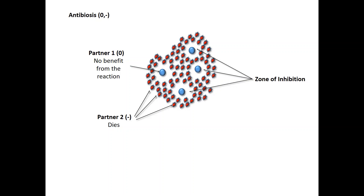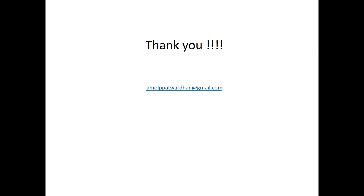Antibiosis is a kind of interaction where one organism secretes chemicals that are detrimental to another organism. The partner who secretes the chemical does not get benefitted at all, but the partner who receives the chemical dies. There is a zone of inhibition around the secreting organism where the other is not seen. This kind of interaction does not happen commonly in nature; it can happen in controlled conditions in a laboratory. The best example is the creation of antibiotics.